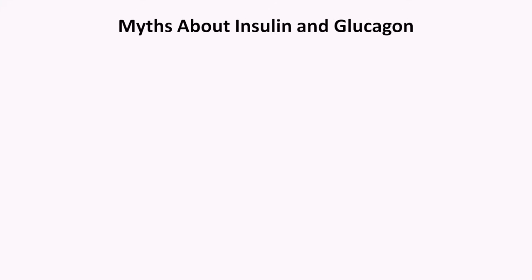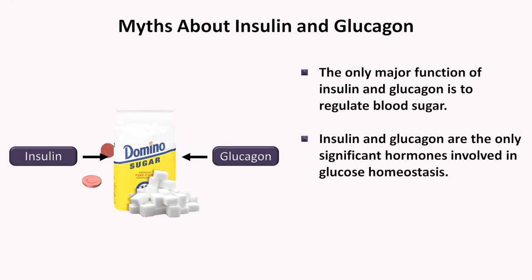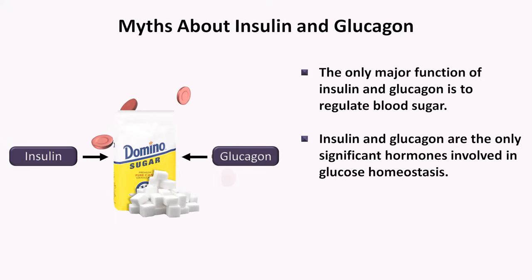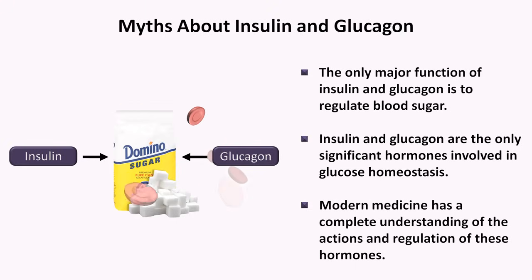I'm going to start off by mentioning three very pervasive myths about insulin and glucagon. The first myth is that the only major function of insulin and glucagon is to regulate blood sugar. Second, that insulin and glucagon are the only significant hormones involved in glucose homeostasis — specifically the very simple model in which insulin makes blood sugar go down and glucagon makes it go up. And last, that modern medicine has a complete understanding of the actions and regulation of these hormones. Despite the fact that I encounter students and doctors alike with these beliefs, none of them are true.